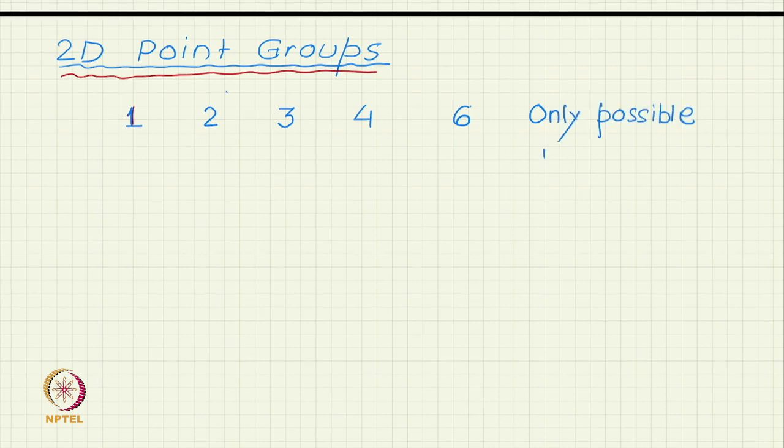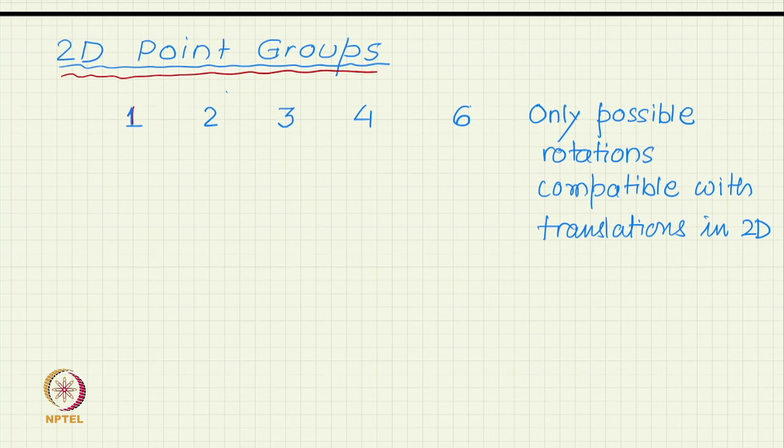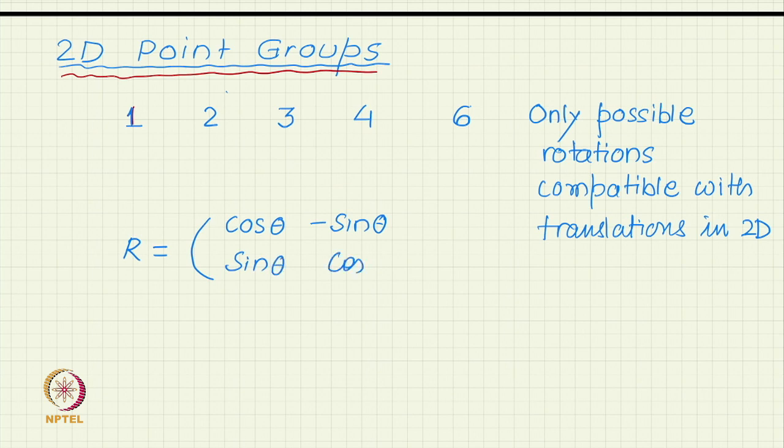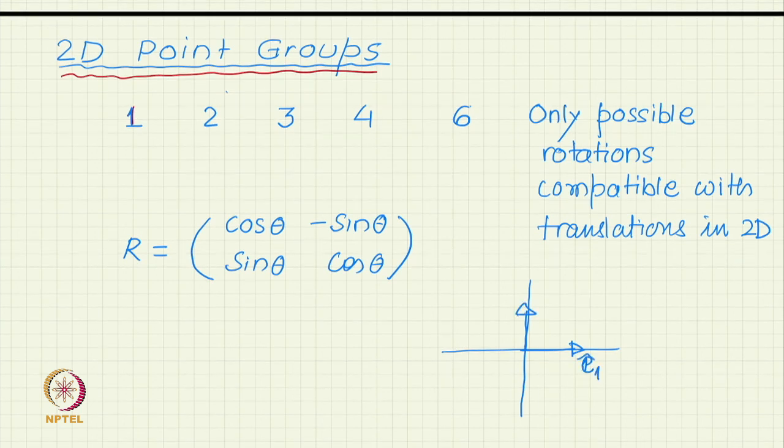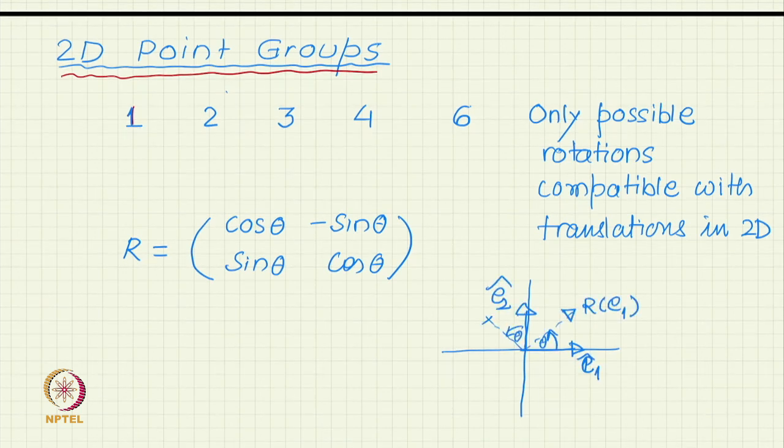The only rotation axis possible, all you have to do is to write a rotation matrix in 2D. A rotation matrix in 2D will be cos theta minus sin theta, sin theta cos theta in an orthogonal coordinate system. If you rotate by theta, the first column will be the components of rotated E1. E1 is a unit vector along x axis. If you rotate it you get R E1 at an angle theta. Since it is a unit vector its components will be cos theta and sin theta. Similarly E2 is rotated into R E2. Its component will be minus sin theta and cos theta.